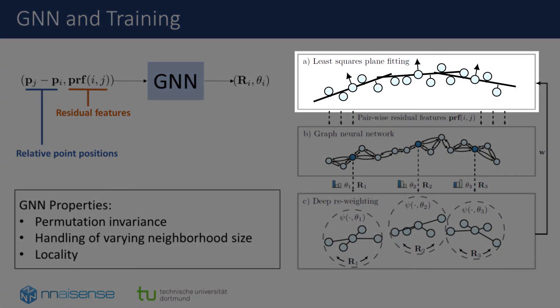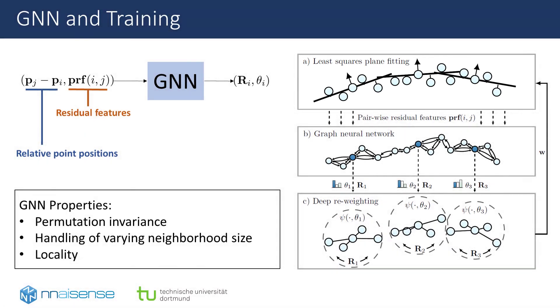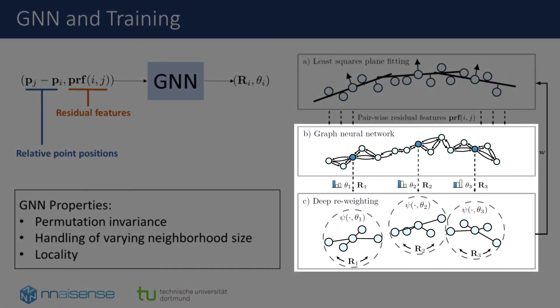We calculate the least squares solution using eigendecomposition of the neighborhood's covariance matrices, which is differentiable. The solution is used to infer new parameterizations for the kernel, which re-weights the points of each neighborhood. The GNN and kernel network parts of the algorithm are trained to minimize the angle error between the normal vector solutions and ground truth normals.